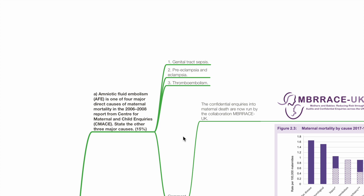The other three major direct causes of maternal mortality include genital tract sepsis, preeclampsia and eclampsia, and thromboembolism.